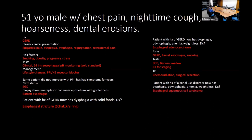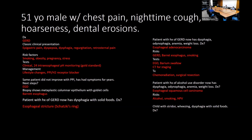Key distinction in esophageal cancer: GERD and Barrett's esophagus plus smoking predispose to adenocarcinoma (distal esophagus/GEJ). Alcohol, smoking, and HPV predispose to squamous cell carcinoma, which affects the upper two-thirds of the esophagus. Adenocarcinoma arises at the distal junction closest to the stomach, which makes sense given GERD as the biggest risk factor.